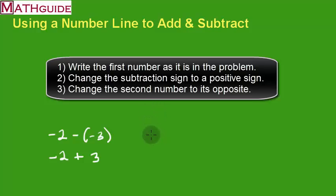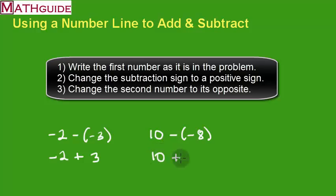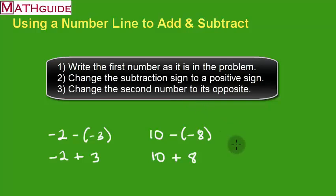How about ten minus negative eight? Keep the first number the same, change it to addition, take the opposite of the second number. The opposite of negative eight is positive eight. So ten minus negative eight is the same thing as ten plus eight. And then you would do that problem.